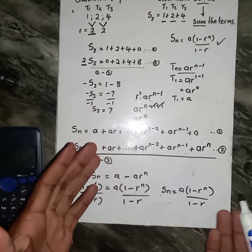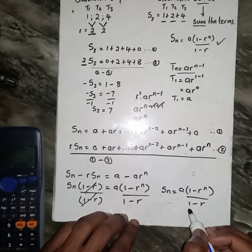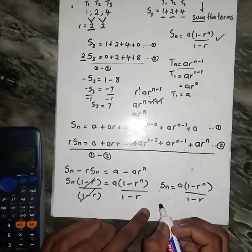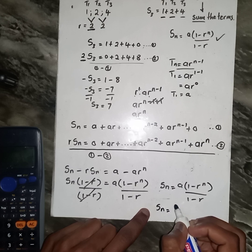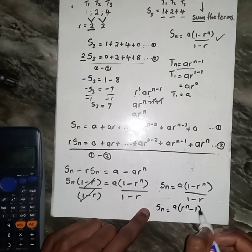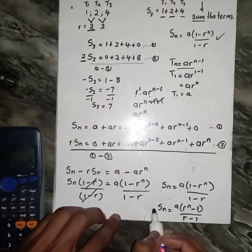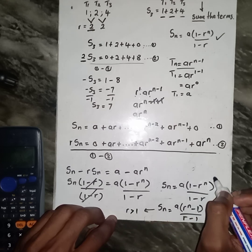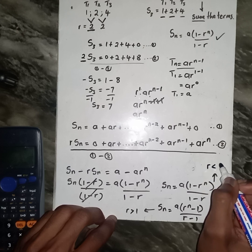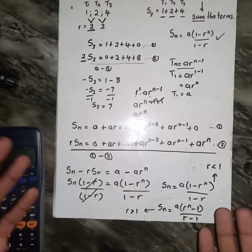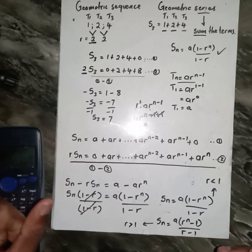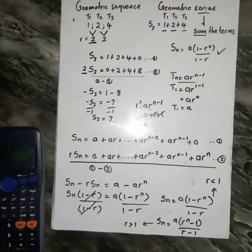We also have another version of this formula: Sn = a(rⁿ−1)/(r−1). The difference is that we use a(1−rⁿ)/(1−r) when r is less than 1, and a(rⁿ−1)/(r−1) when r is greater than 1. Either way, we have successfully proved the sum formula for the geometric series.